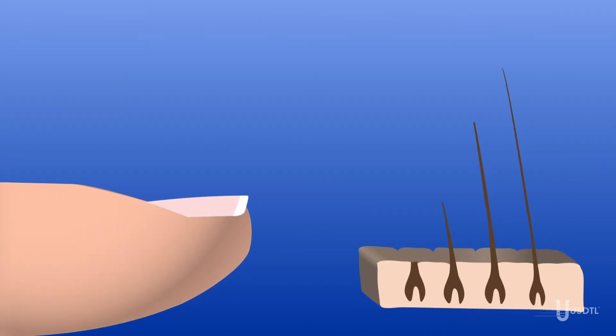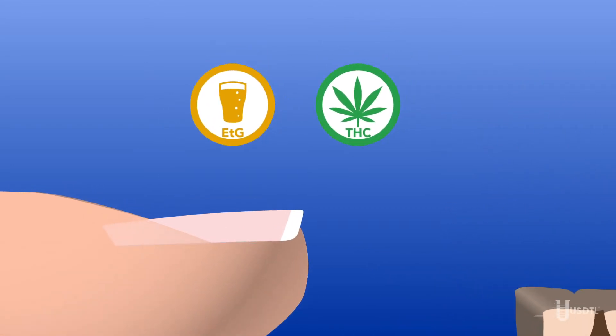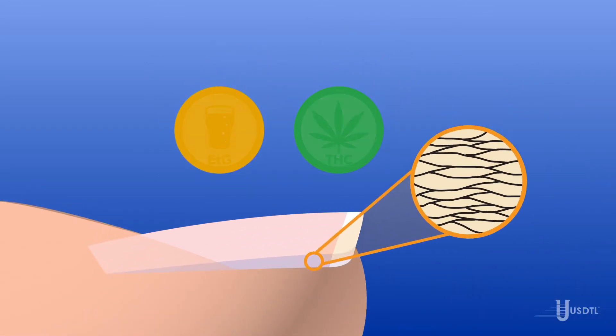Like hair, nail is a keratinized protein. The same drugs detected in hair can be detected in nail. The compounds become entrapped and bind within the nail structure.